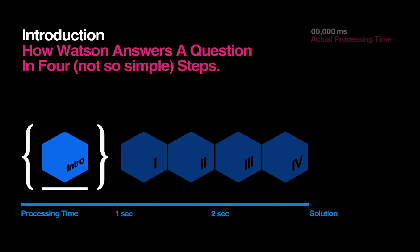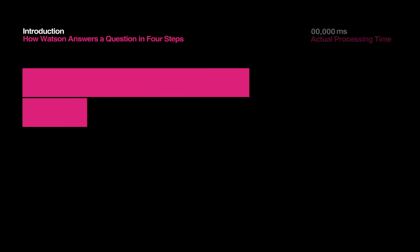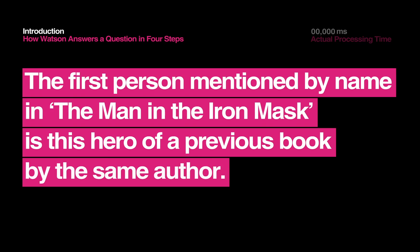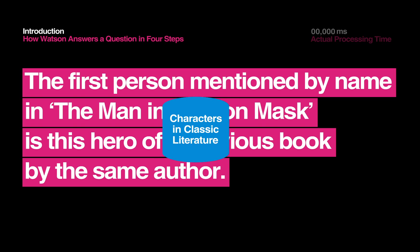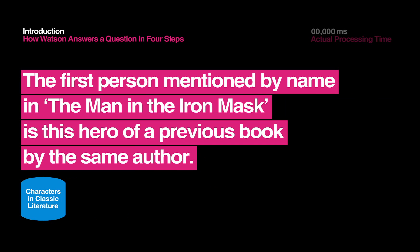How Watson Answers a Question in Four Not-So-Simple Steps. The first person mentioned by name in The Man in the Iron Mask is this hero of a previous book by the same author. This is a typical Jeopardy! clue, presented in the tricky Jeopardy! format that can be pretty difficult for a person to understand.